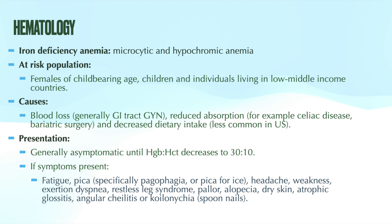Patients with reduced absorption are not losing blood and are getting adequate dietary iron — but they are not absorbing it. Populations at risk for reduced absorption include those with celiac disease, H. pylori infection, gastritis, and patients who have had bariatric surgery.